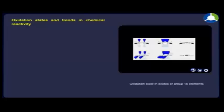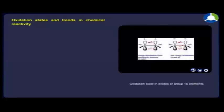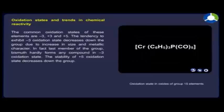The common oxidation states of these elements are -3, +3 and +5. The tendency to exhibit -3 oxidation state decreases down the group due to increase in size and metallic character. In fact, the last member of the group bismuth hardly forms any compound in -3 oxidation state.